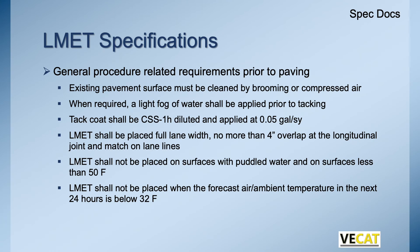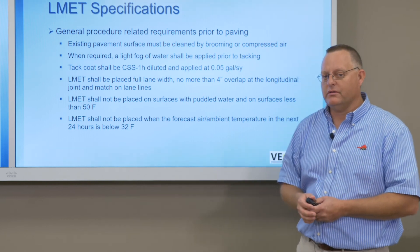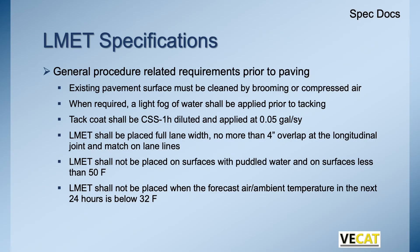Some other things to keep in mind for latex: existing pavement has to be cleaned — broomed or blown off with compressed air. We only do fogging if necessary in front of the tacking. The tack coat is CSS1H, diluted and applied at a light rate of 0.05 gallons. Latex is done at full lane width with no more than a four-inch overlap, and we're matching on lane lines — joints need to follow skip lines and the edge of pavement. Latex is not applied on puddled surfaces or cold surfaces because the emulsions need to break. If it's going to be below freezing within 24 hours, we're not to lay it.